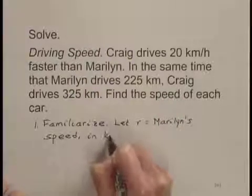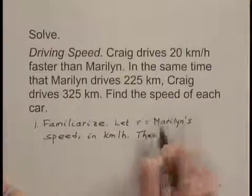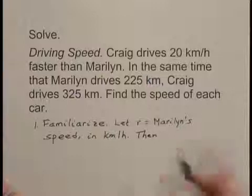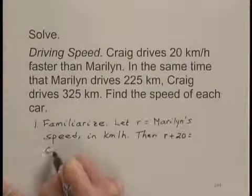This is going to be in kilometers per hour. Then since Craig drives 20 kilometers per hour faster, we can say that R plus 20 is going to be Craig's speed.